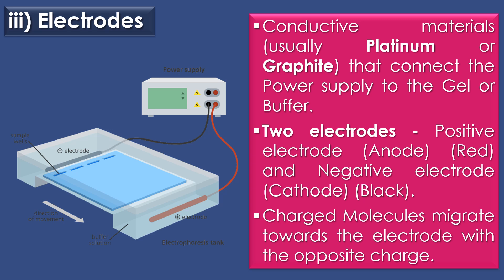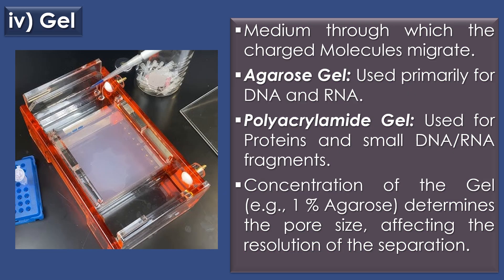The third component is electrodes. Electrodes are the conductive materials, usually made of platinum or graphite, that connect the power supply to the gel or buffer. There are usually two electrodes: a positive electrode or anode and a negative electrode or cathode. The charged molecules migrate towards the electrode with the opposite charge.